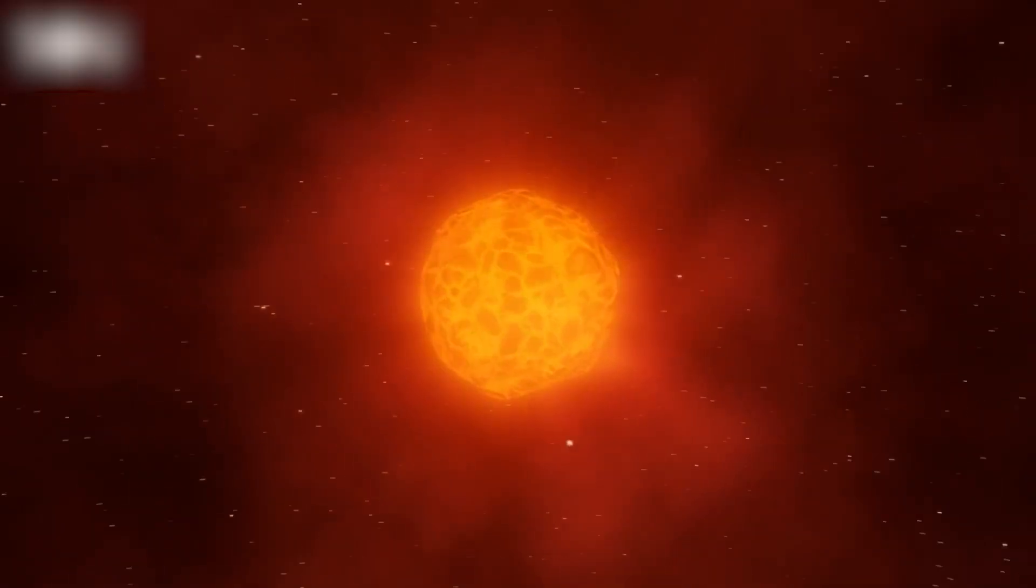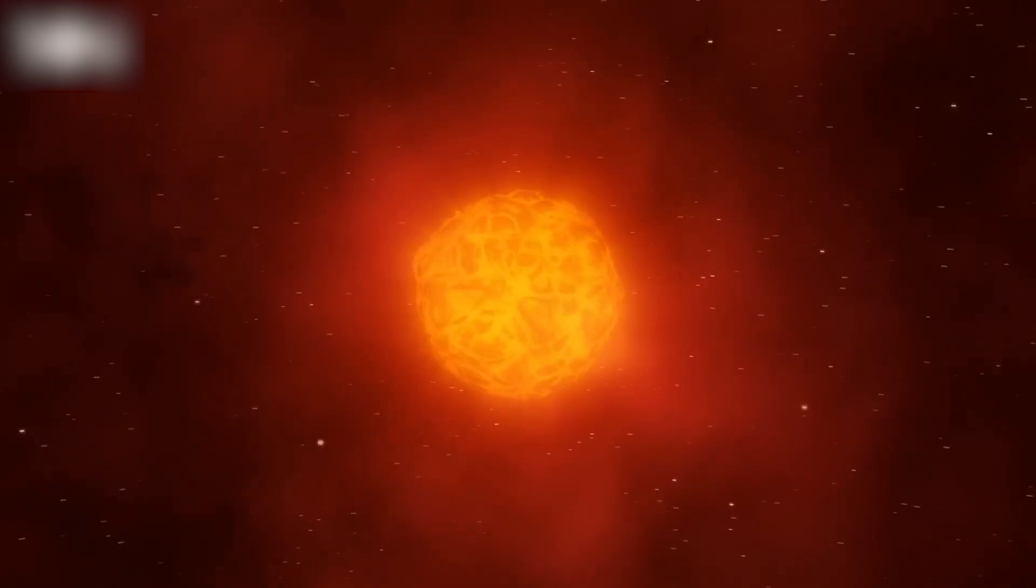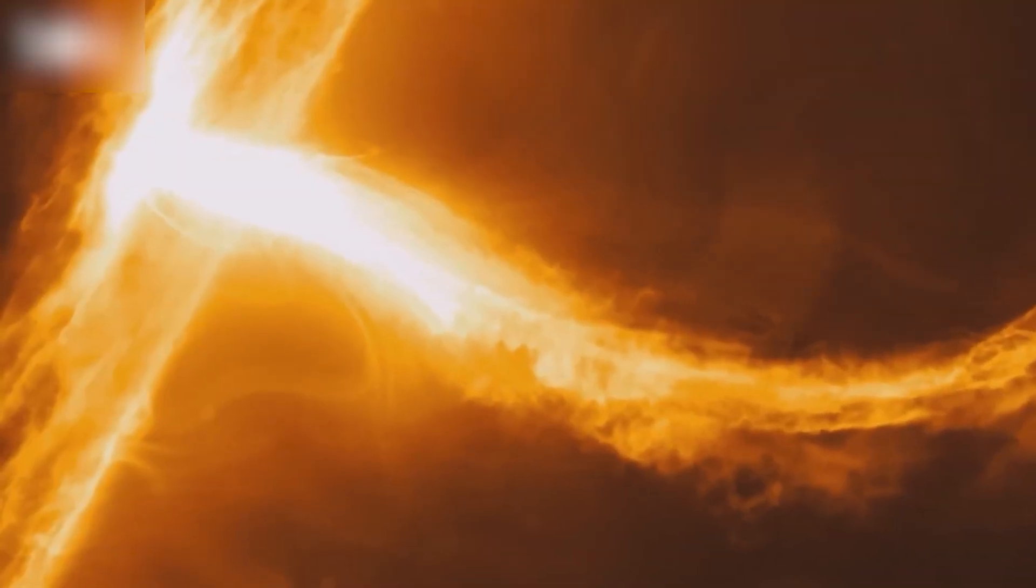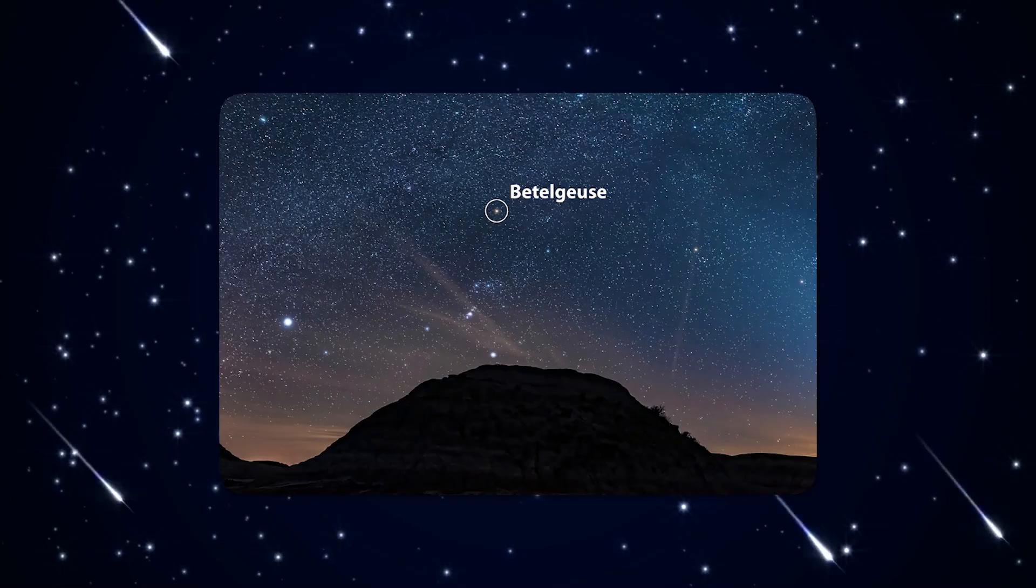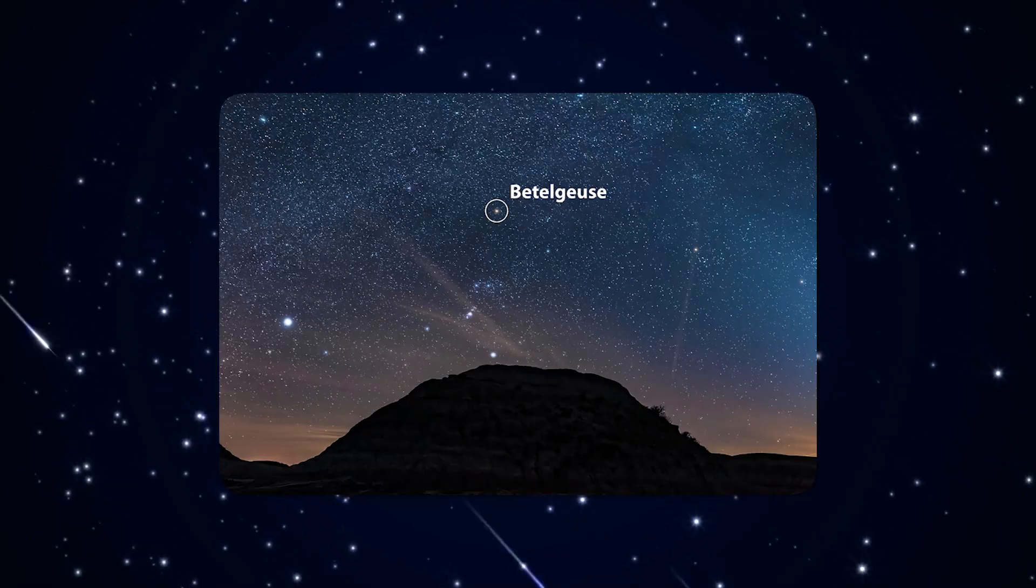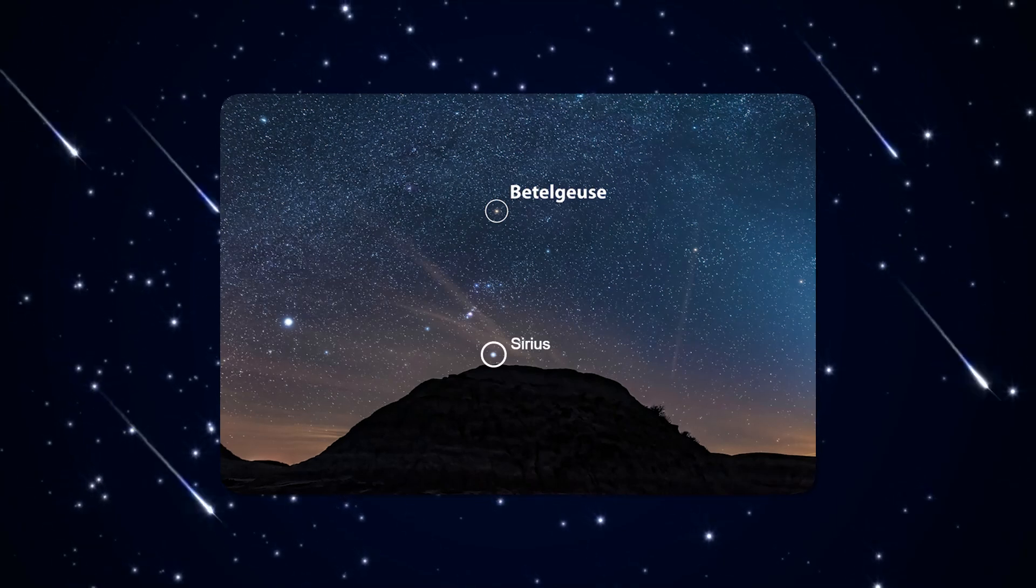Visible light accounts for just around 13% of Betelgeuse's radiative energy. If human eyes could see light at all wavelengths, Betelgeuse would be the brightest star in our night sky, surpassing Sirius.